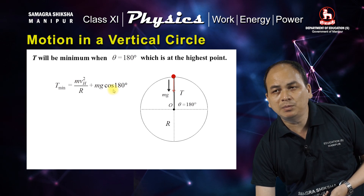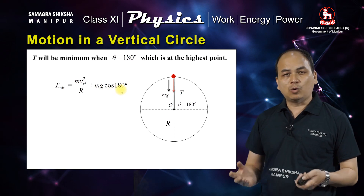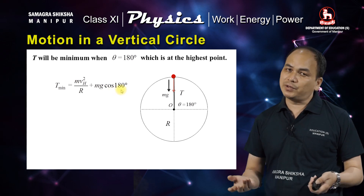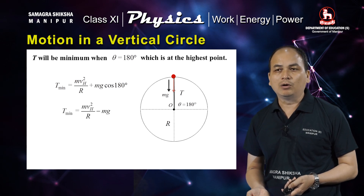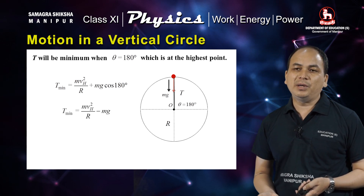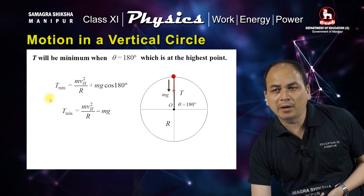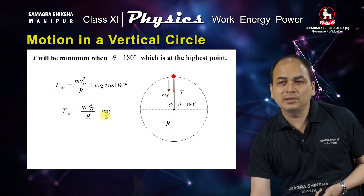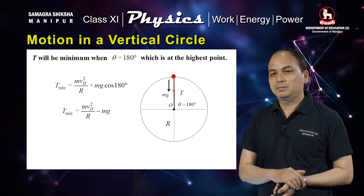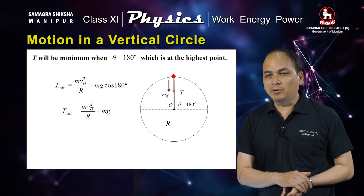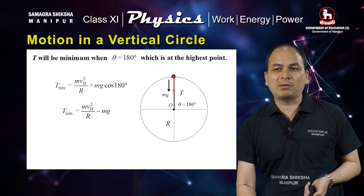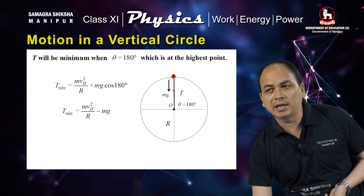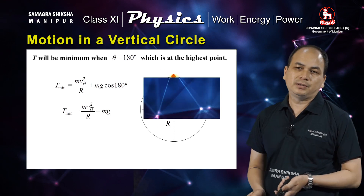At the highest point, we have plus mg·cos180°. Cos180° is minus 1, so the minimum tension equals mVh²/r minus mg.